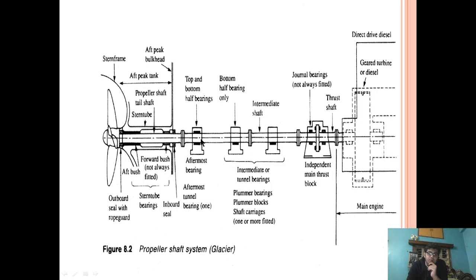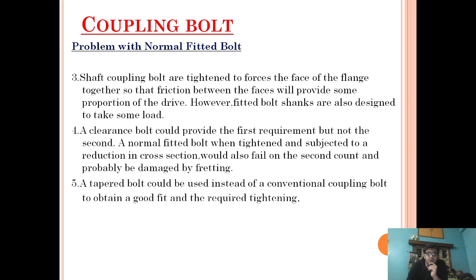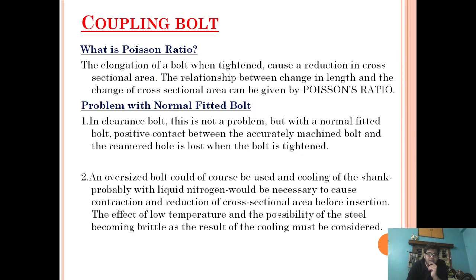The reason we are so concerned about this coupling bolt is that these bolts are the main elements helping in the transmission of thrust to the thrust block, which ultimately transfers it to the hull. If there is friction or fretting happening here, it may cause detachment of the propeller from the shaft and the whole system can fail. Hence it is very necessary that a good fitting is obtained, and for that reason Poisson's ratio comes into the picture.